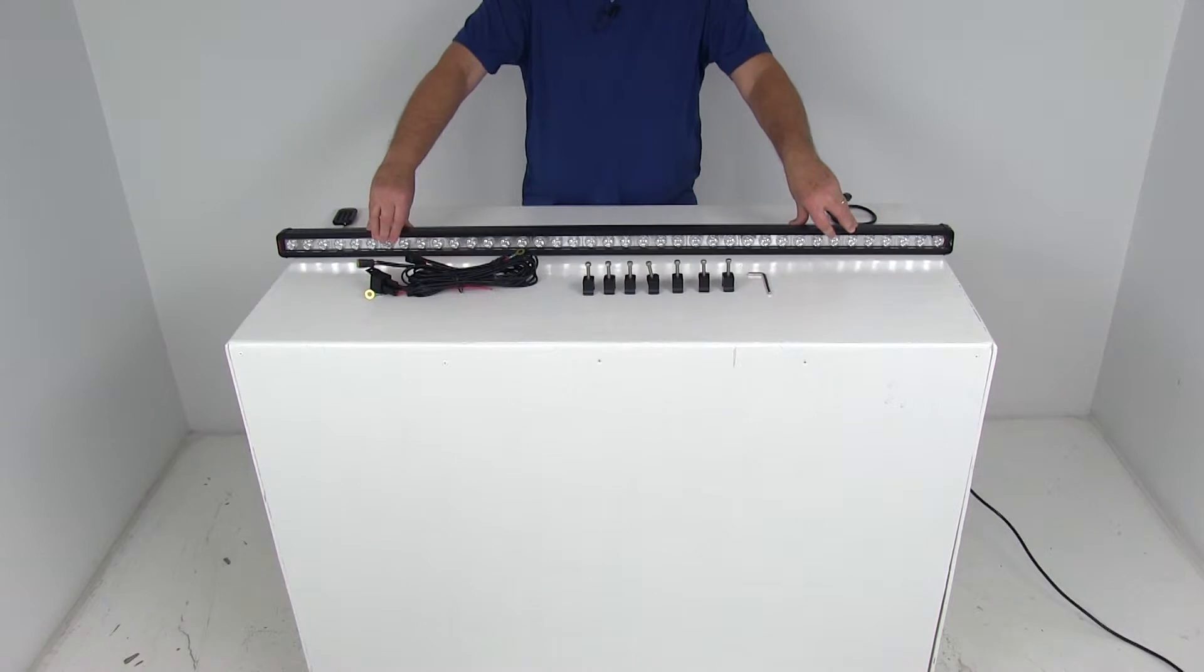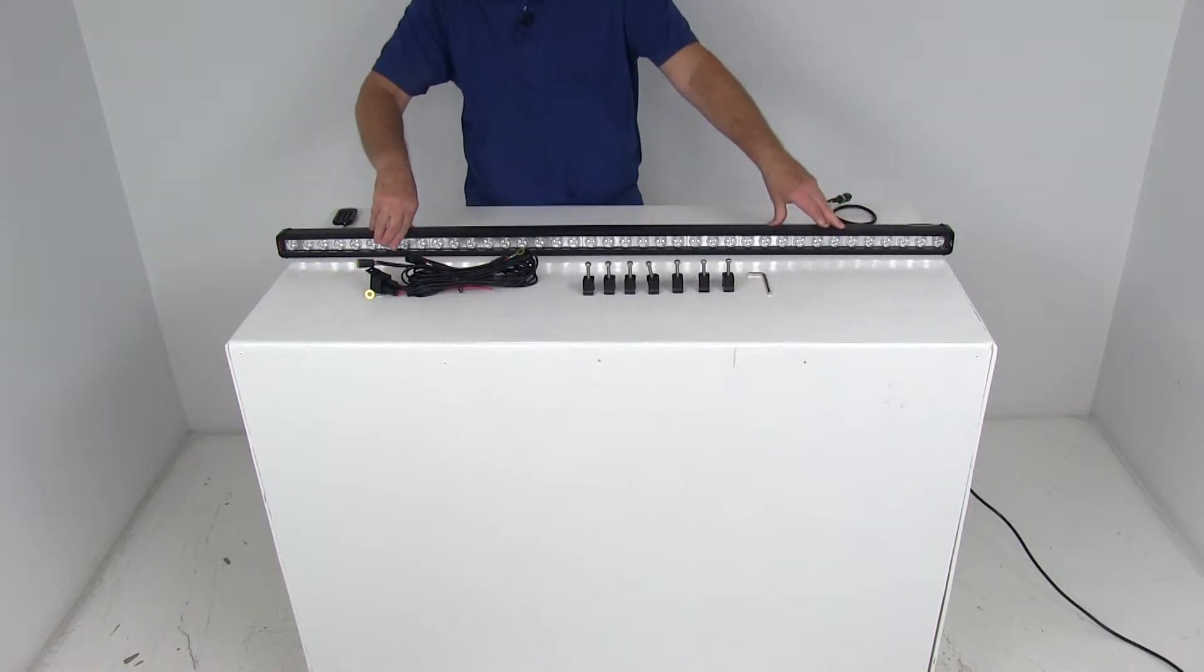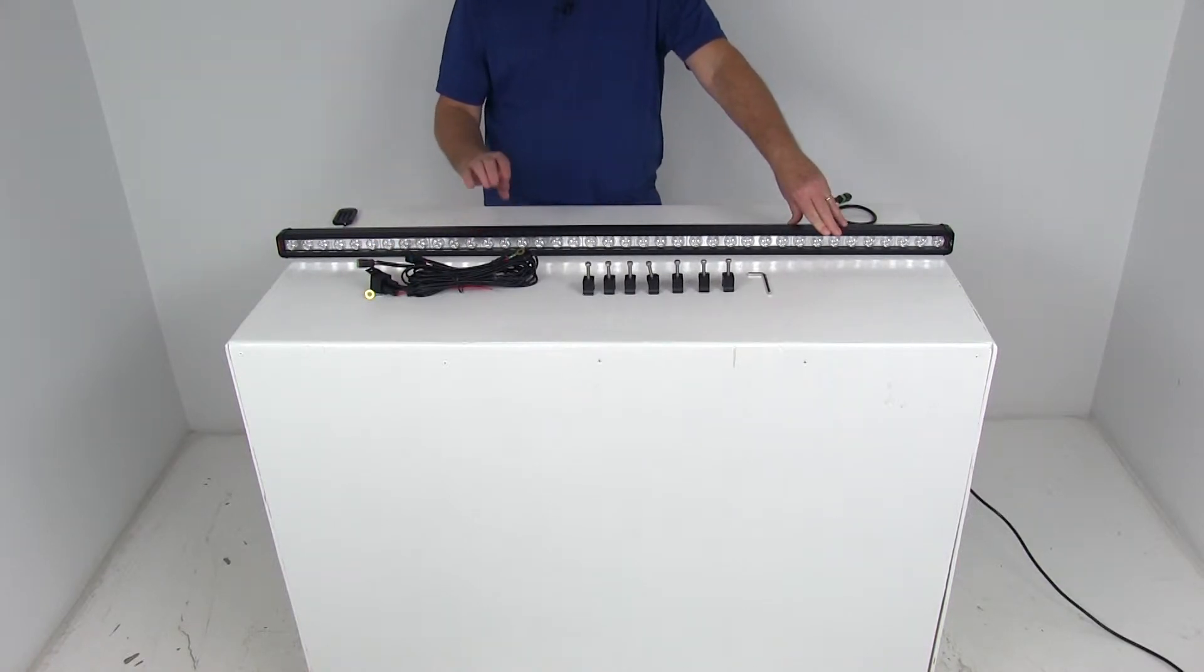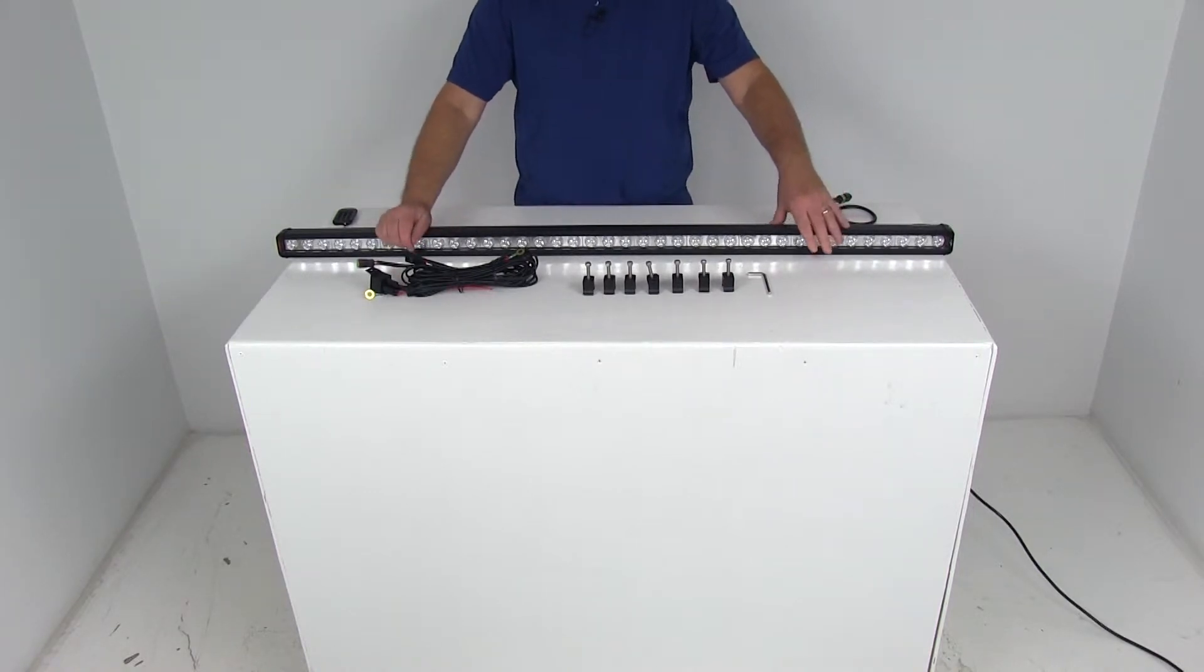Now this light can be dimmed to 50% using a Vision X dimmer, we do sell those separately. There's two different ones they make, they'll be listed as a related product on this product page, and one is a push button, the other is a dial dimmer, so either one would work with this.